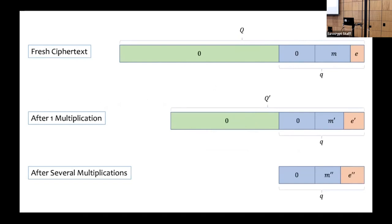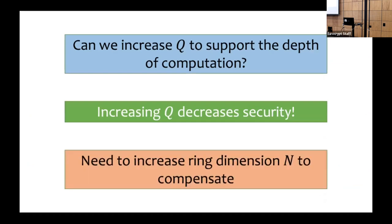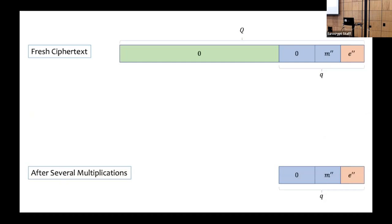After several multiplications, all the excess ciphertext modulus bits have been consumed and no more homomorphic computation can be performed. A natural question is: can we simply increase Q to support the depth of the computation? Unfortunately, we can't, because increasing Q decreases security and we would need to increase the ring dimension — the degree of the ring polynomials — to compensate. So it becomes completely impractical very quickly for large-depth computation.